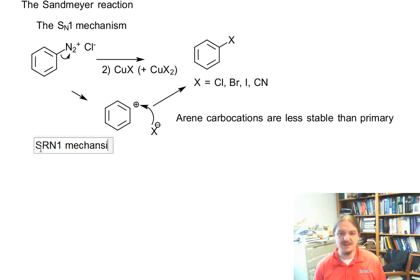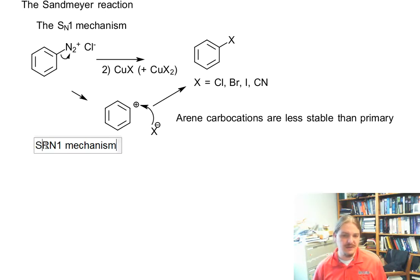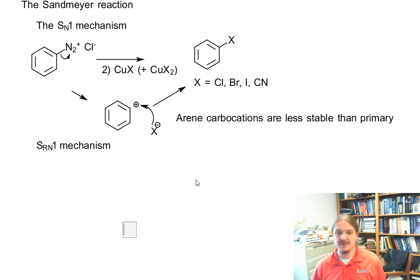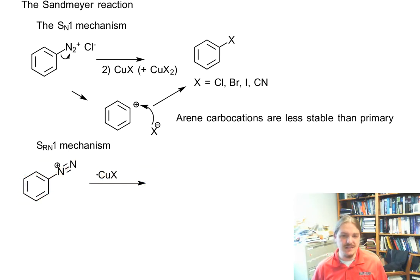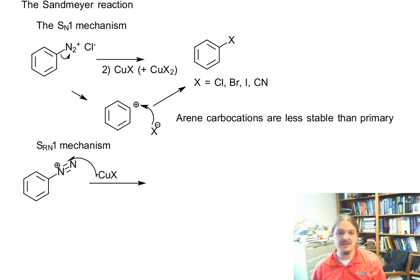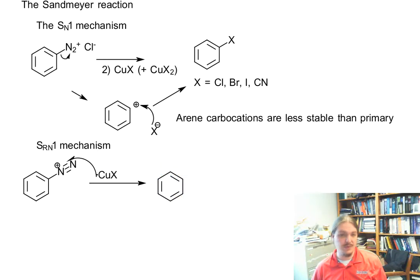So there's a second proposed mechanism for this reaction: the SRN1, where this stands for substitution radical nucleophilic. You might recognize some parts of this mechanism. For this mechanism, I feel compelled to draw out the diazo group, and I'm going to draw some of the radical arrows. What happens initially is that we get electron donation into the carbon-nitrogen triple bond.